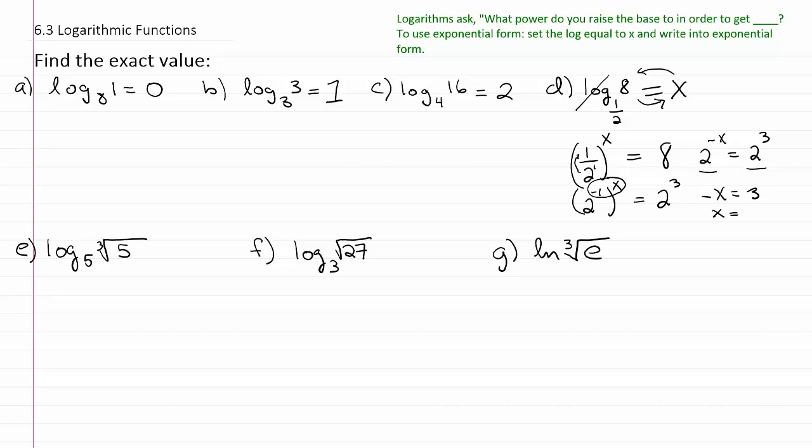So that means negative x must be equal to 3. Therefore, x must be equal to negative 3. And that's your solution for the problem. So ultimately, x here is negative 3. So what power do you raise 1 half to to get 8? You raise it to the negative 3 power.